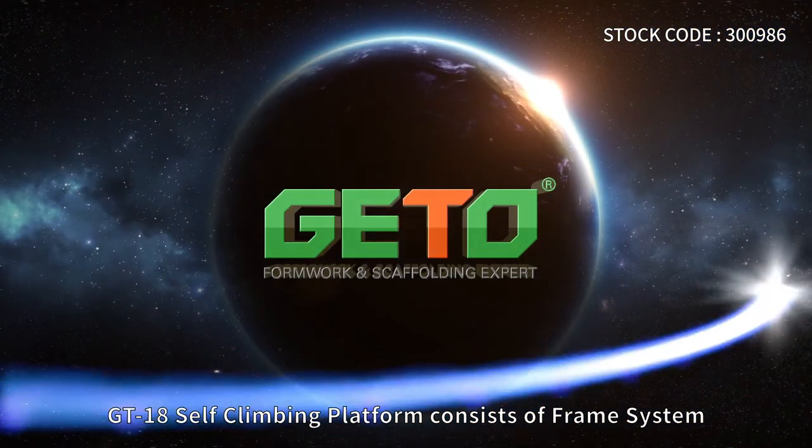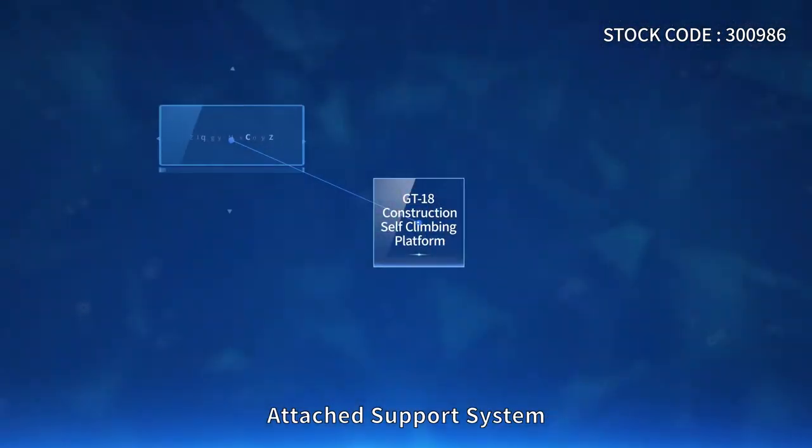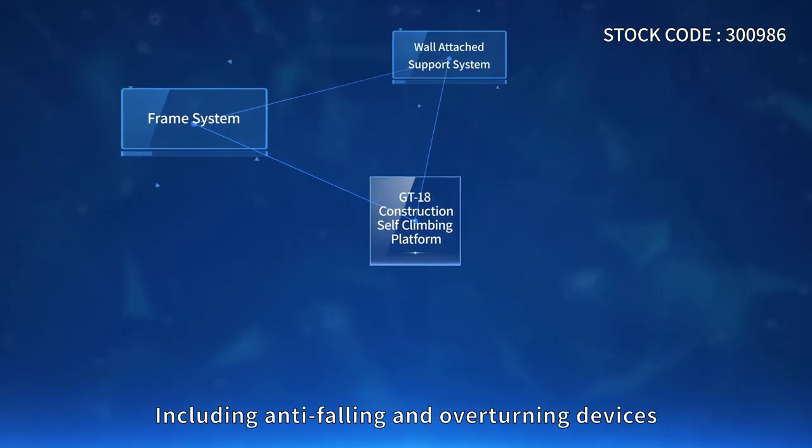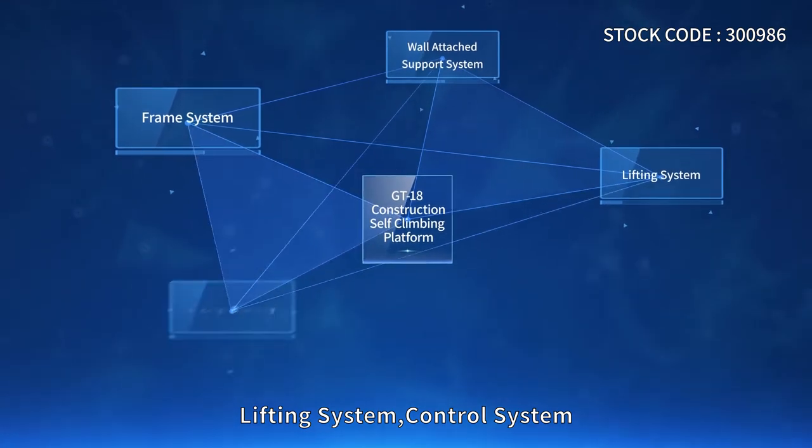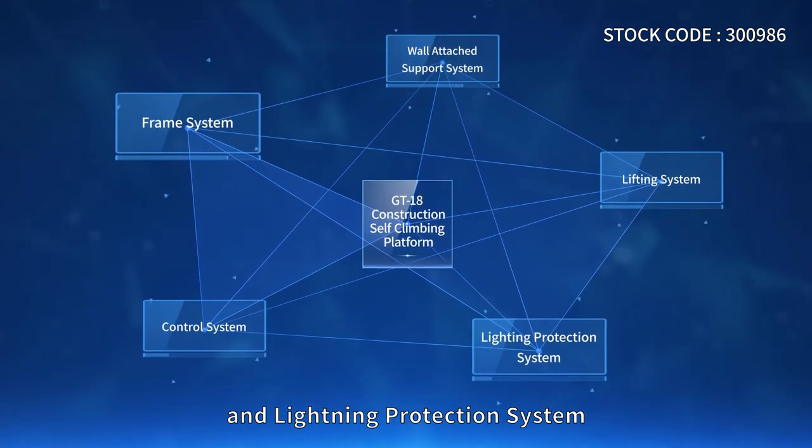GT18's self-climbing platform consists of a frame system, attached support system (including anti-falling and overturning devices), lifting system, control system, and lightning protection system.